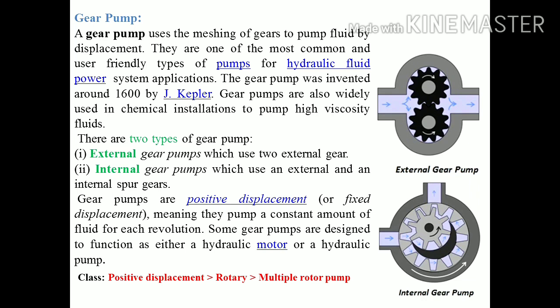Gear pumps are of two types: external gear pumps use two external gears; in the internal gear pump, one gear is inside the other — the small gear is the internal gear and the outer gear is the external gear. The gear pump is a positive displacement pump, meaning the pump delivers a constant amount of fluid for each revolution. Some gear pumps are designed to function also as hydraulic motors. In classification terms it can be called a positive displacement rotary type multi-rotor pump.